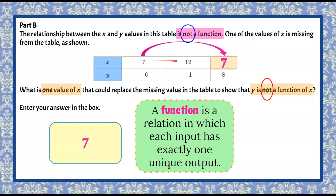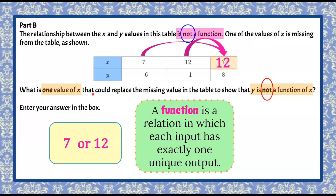Maybe you said 12 — because if 12 is an input with an output of negative one, and we put 12 in place of the question mark, it would also have an output of eight, making this not a function because 12 as an input has two different outputs. So you could have answered seven or 12 and been correct. You only needed to answer one value, but both are valid.